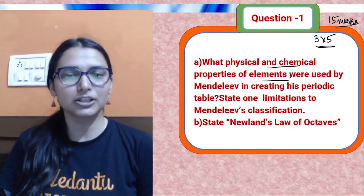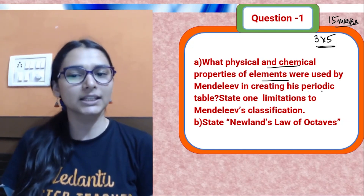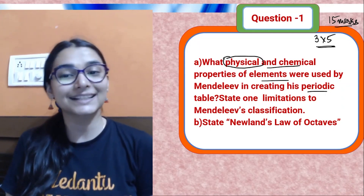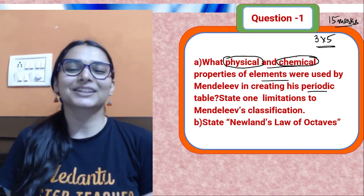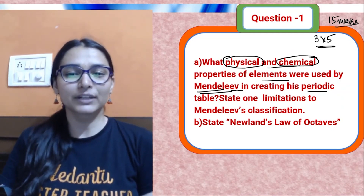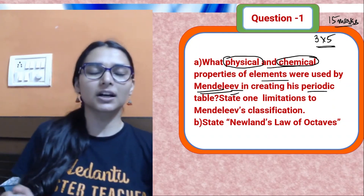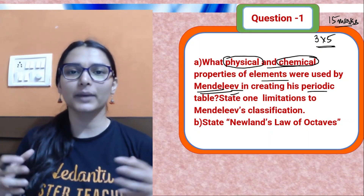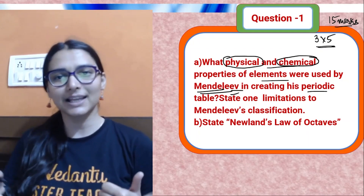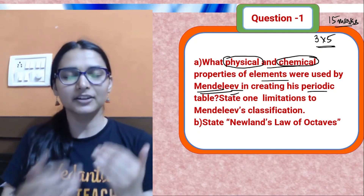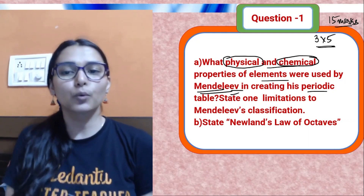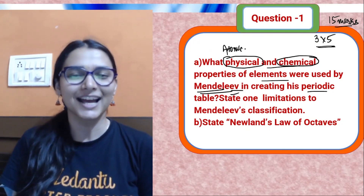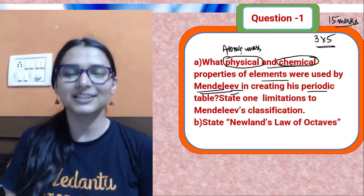First question: what physical and chemical properties of elements were used by Mendeleev in creating his periodic table? Read the scientist's name carefully — Mendeleev. He worked on classifying elements so that elements with similar physical and chemical properties are grouped together, repeating after a certain interval. The physical property used was atomic mass.